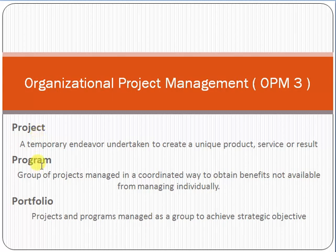A program is basically a group of projects managed in a coordinated way to obtain benefits not available from managing them individually. For example, if we are managing four or five projects with the same objective, resources can be shared — one resource from one project can be shared with another. That is called a program.